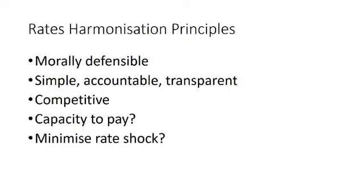When two councils are amalgamated, they'll both have different rate structures, different categories, subcategories, base rates, minimum rates, different actual tax rates on the dollar of land value. They have to be harmonized. You're one council now, called Cootamundra Gundagai. Each person that uses the land in a particular way needs to be paying the same tax rate as anyone else using their land in that way.